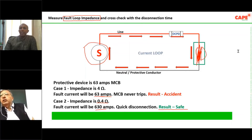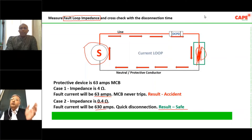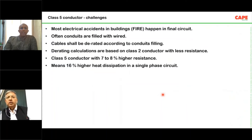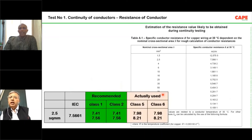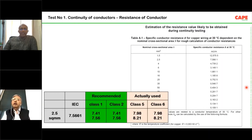Earth loop impedance is defined in IEC standards and can be achieved by using the proper type of wire — Class 2, Class 3, Class 4, Class 5. As a designer, one must check the length of the circuit and calculate what the earth loop impedance will be. Class 2 has lower resistance and Class 5 or Class 6 has higher resistance, so Class 2 wire should be used to achieve the required equipotential resistance. Can you explain the cost difference between Class 2 and Class 5 conductors?